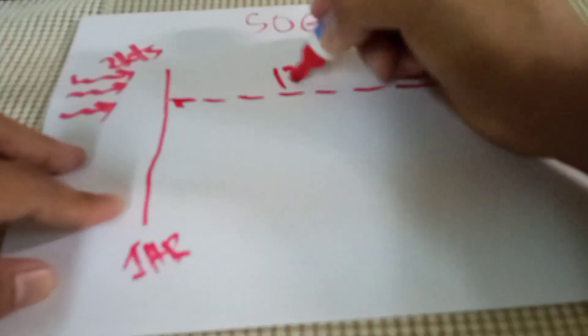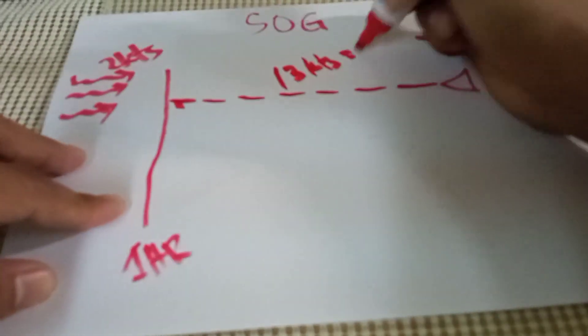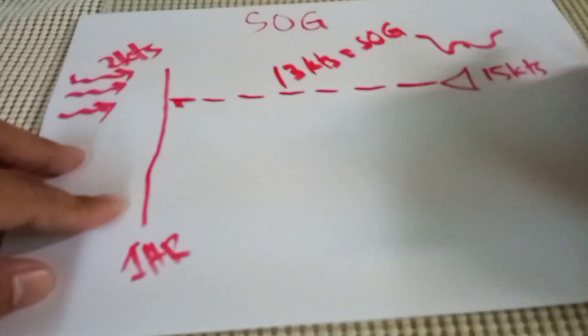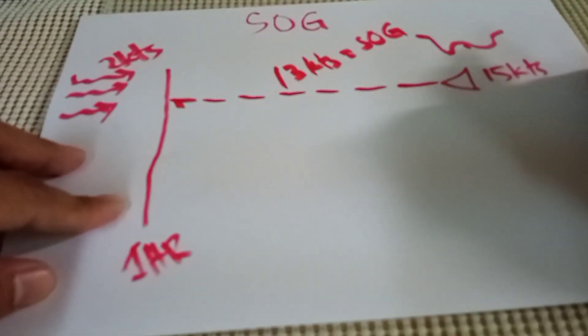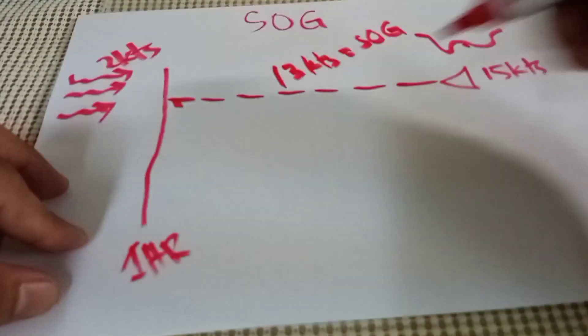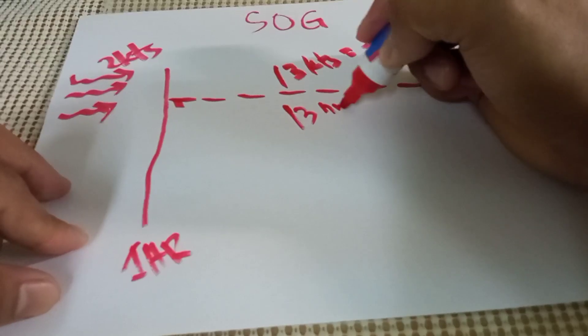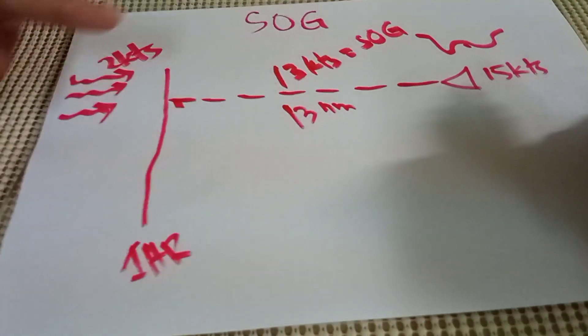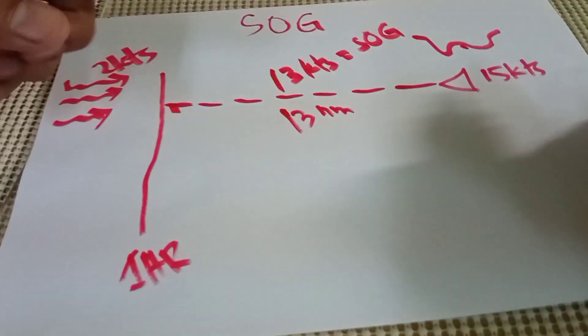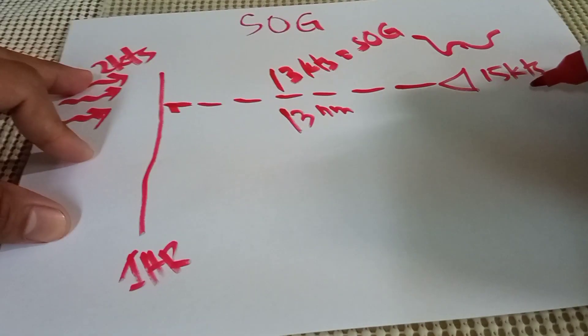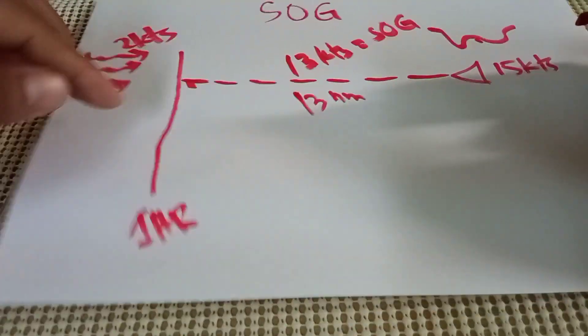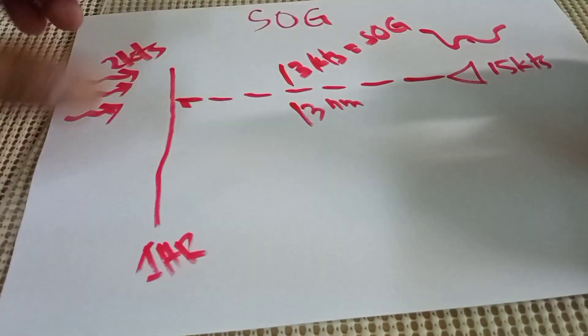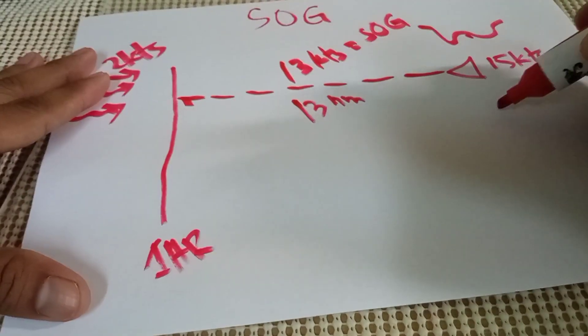You have 13 knots SOG, and your vessel travels 13 nautical miles in one hour. Because there are two knots against your vessel, you have to deduct two knots from 15 knots of speed. So the SOG is 13 knots.